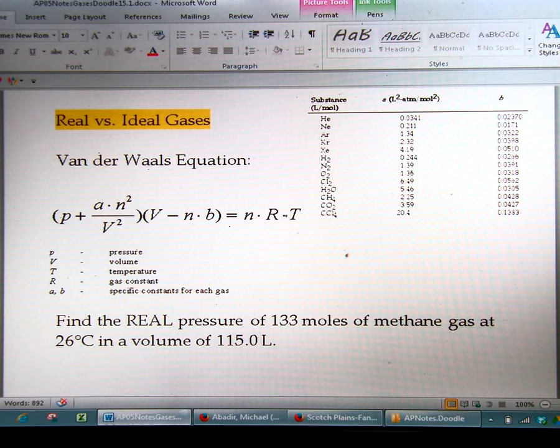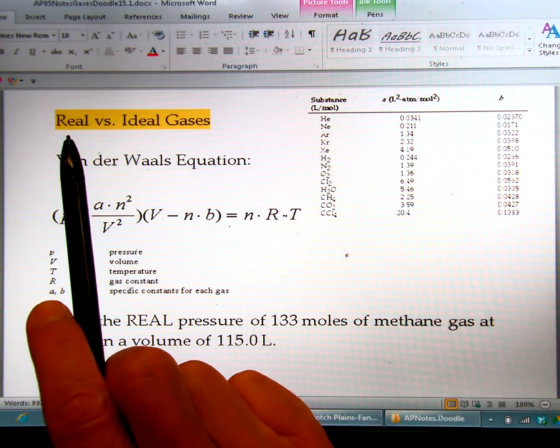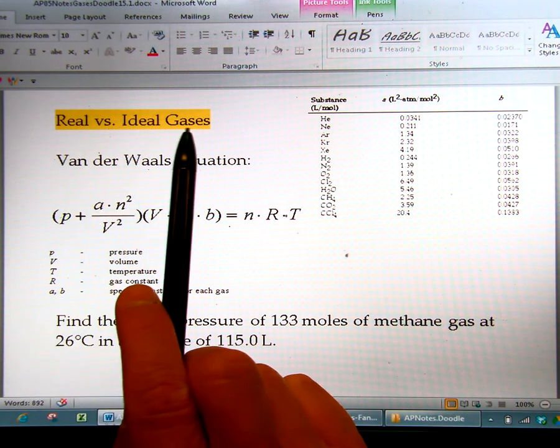Today we're on page 11 of the AP Chemistry Chapter 5 packet on gases, and we're going to be discussing the difference between real versus ideal gases.